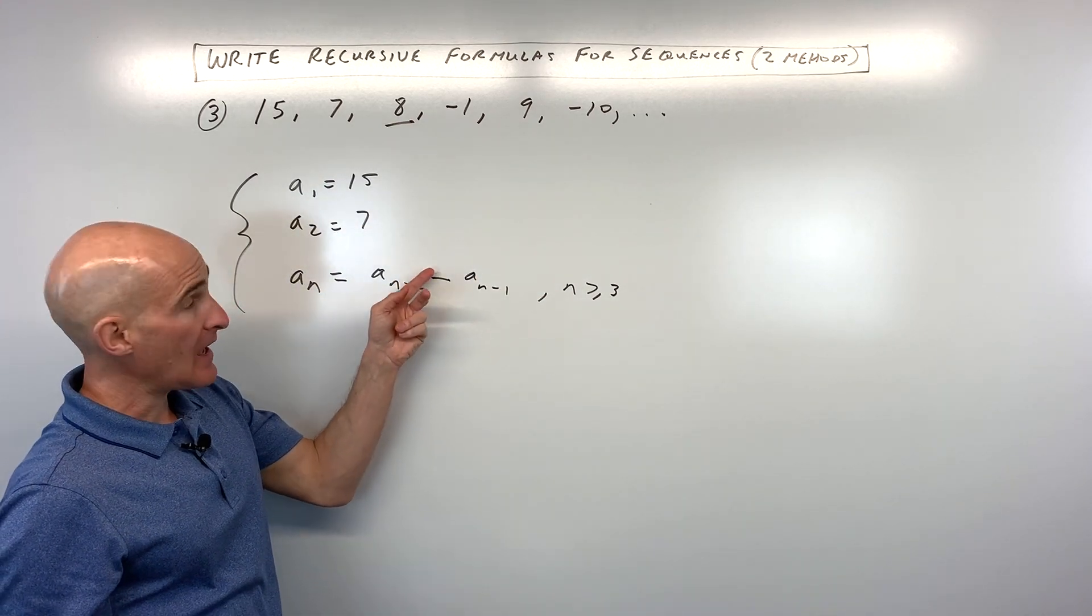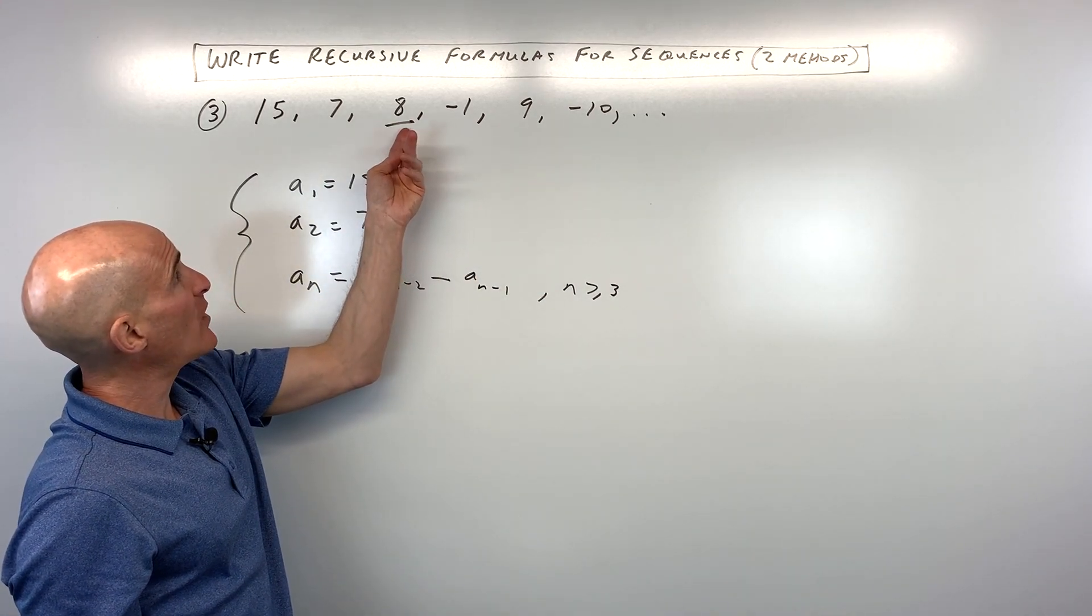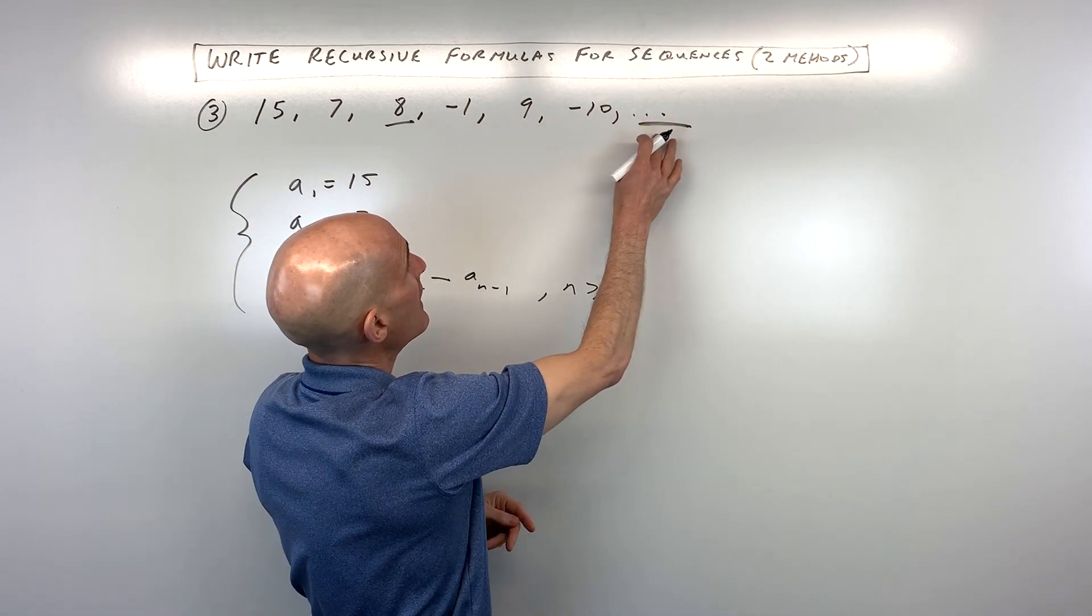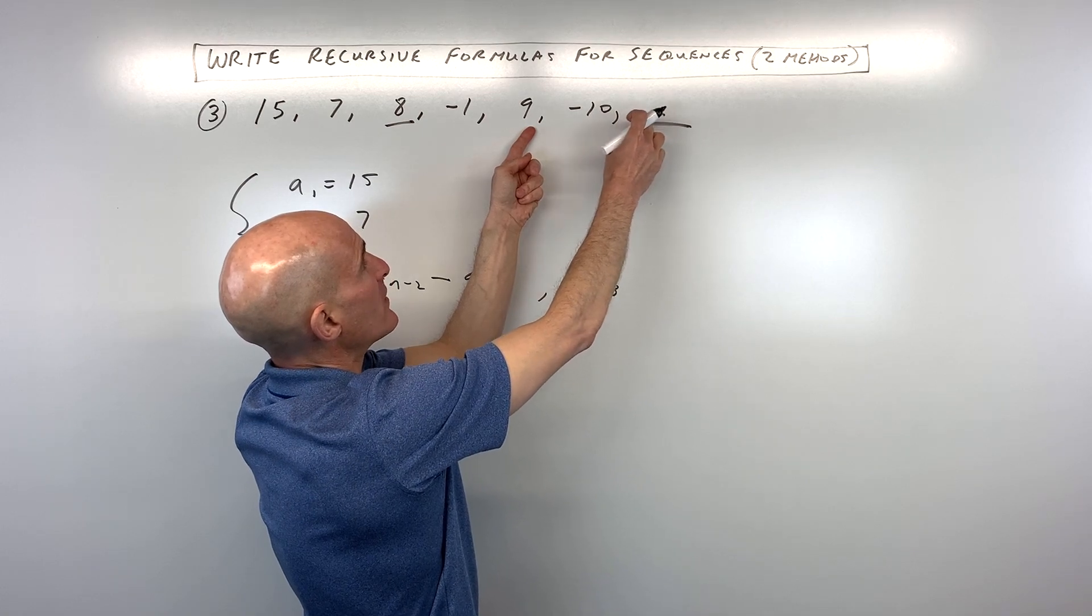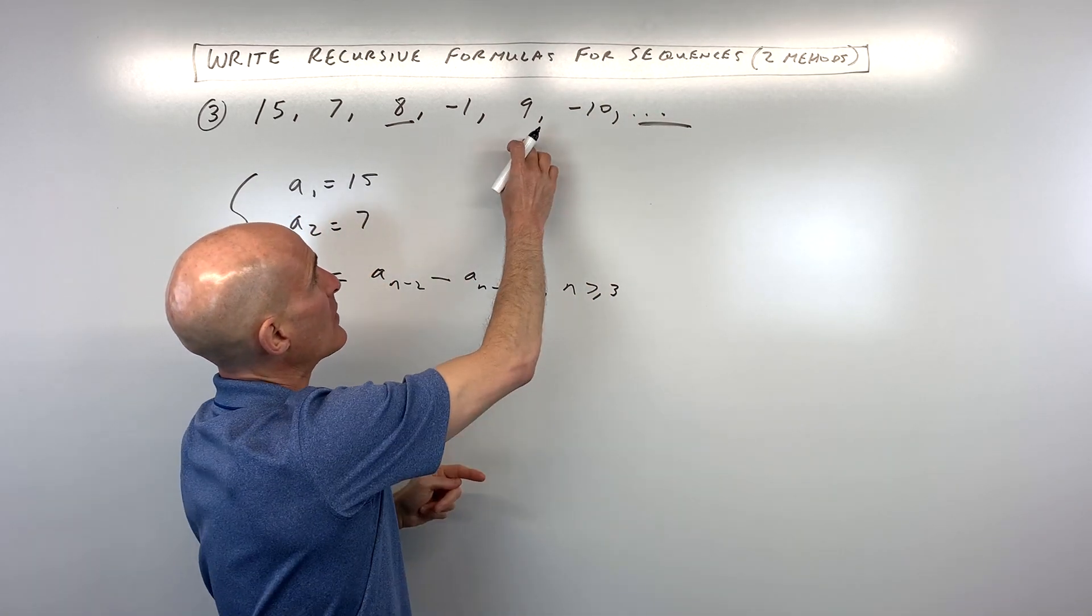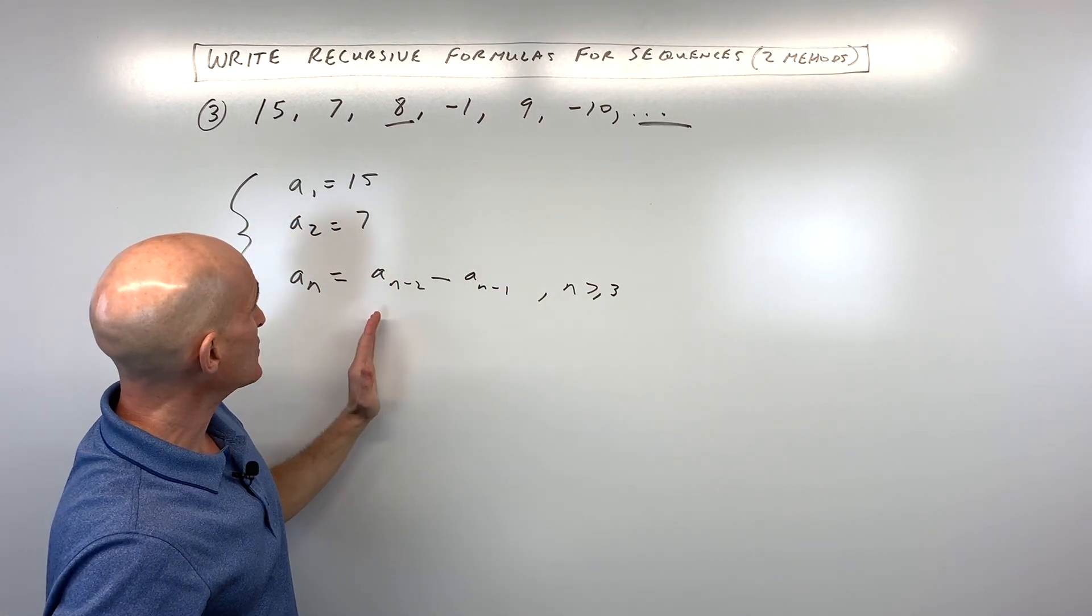So again, remember that n minus 2, that means whatever term you want to find, like say for example, if I wanted to find this one right here, I'd have to go 2 back, and then I'd have to take the one that's 1 back, see n minus 1, and then I would subtract. So that's one option.